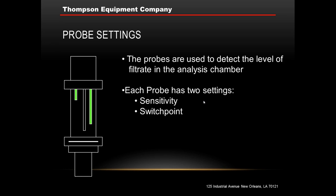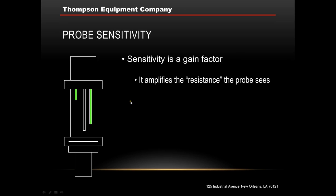Let's take a look at the probe settings. The probes — and there are two of them, an upper and a lower probe — are used to detect the level of filtrate in the analysis chamber. Each probe has two settings: a sensitivity and a switch point setting. These are accessible through the configuration menu of the Dranec. The sensitivity is basically a gain vector, a volume if you will. It amplifies the resistance that the probe sees, and this is adjustable — it's just a numerical multiplier. Typically, most Dranecs have sensitivity settings of roughly 5 to 10.